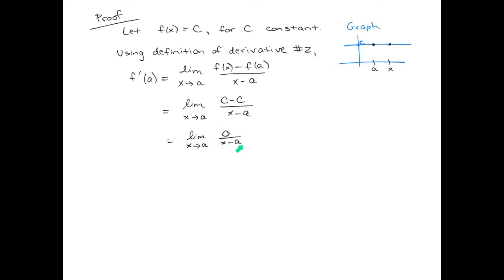Zero divided by x minus a is just equal to zero, so we're taking the limit of a constant. There's no x's in this quantity, and the resulting value is zero for the limit. No matter what your x value is, the derivative is zero. The tangent line is horizontal in this case.